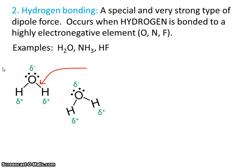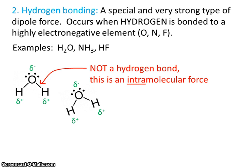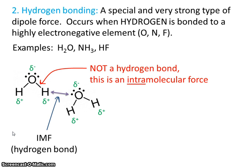Where students often get confused is they think that the bond within the molecule is the hydrogen bond — but this is not the hydrogen bond. A hydrogen bond is a type of intermolecular force; it takes place between molecules. That bond inside the molecule is a type of intramolecular force. But this molecule will exhibit hydrogen bonding — it will just be between this molecule and another molecule. That attraction between molecules is the intermolecular force, and that is an example of hydrogen bonding.